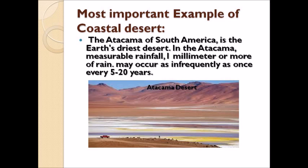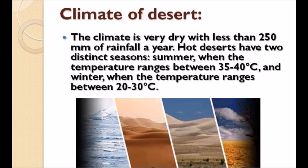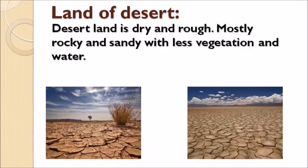The climate of a desert is very dry with less than 250 mm of rainfall a year. Hot deserts have two distinct seasons: summer, when temperature ranges between 35 to 40 degrees Celsius, and winter, when temperature ranges between 20 to 30 degrees Celsius. Desert land is dry and rough, mostly rocky and sandy, with less vegetation and water.